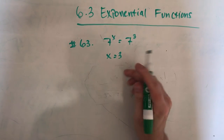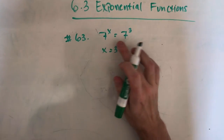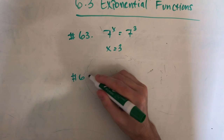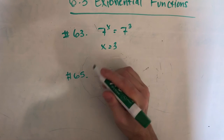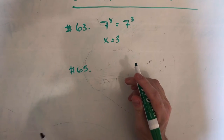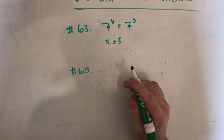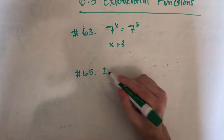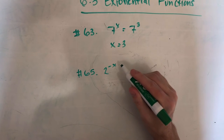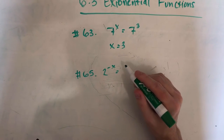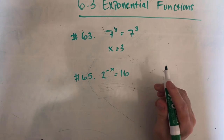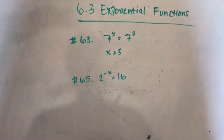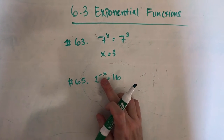So that's number 63 — pretty simple and straightforward, you could look right at it. Number 65 has a little bit more thinking to do, but it's not too bad. We have 2 with a negative x in the exponent, and it equals 16. This one requires a little bit more thinking. Basically we're trying to find x.